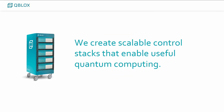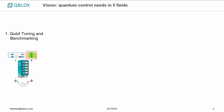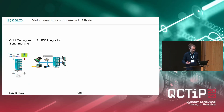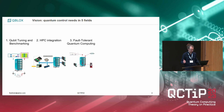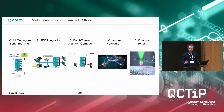So that's what we do: we create scalable control stacks for useful quantum computing. We are encompassing five fields in our vision: first is qubit tuning and benchmarking — you have a big chip and you want to characterize and tune it up. Then we have HPC integration and quantum computing, quantum networks, and also quantum sensing.